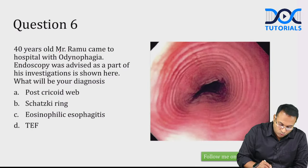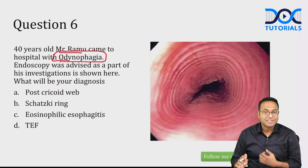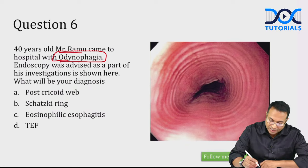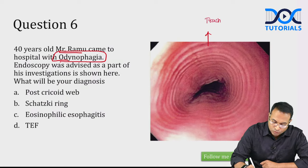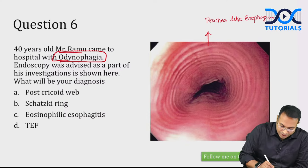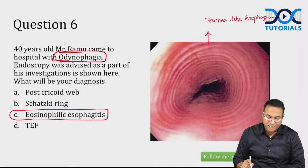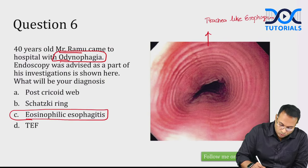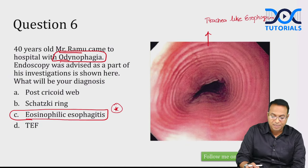40-year-old Mr. Ramu came with odynophagia. Endoscopy shows a trachea-like esophagus — the esophagus looks like a trachea — this is known as eosinophilic esophagitis. On barium swallow, it shows a feline appearance with black and white striped lines.